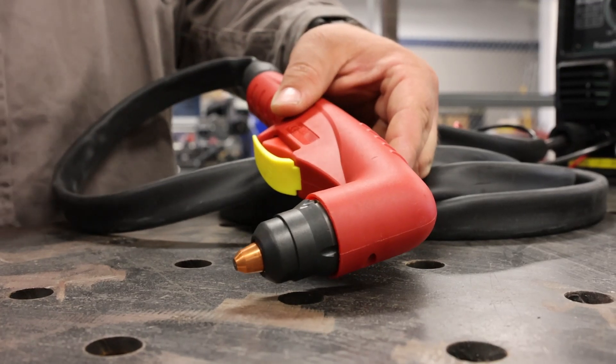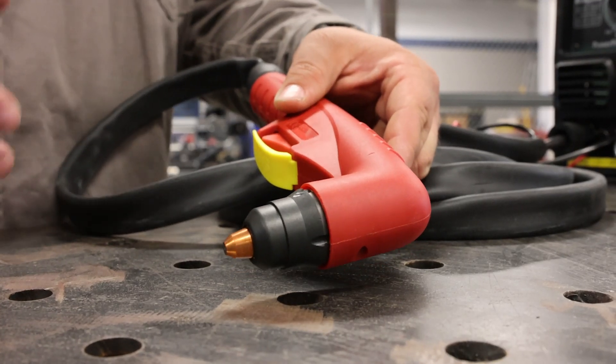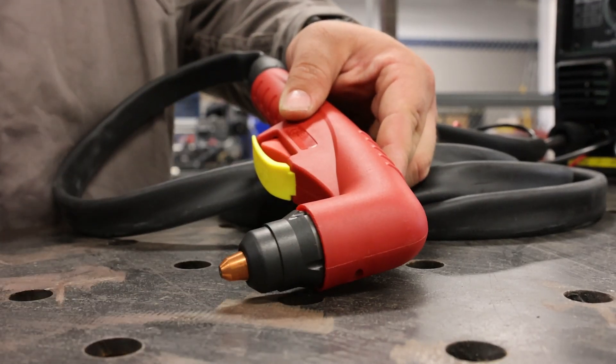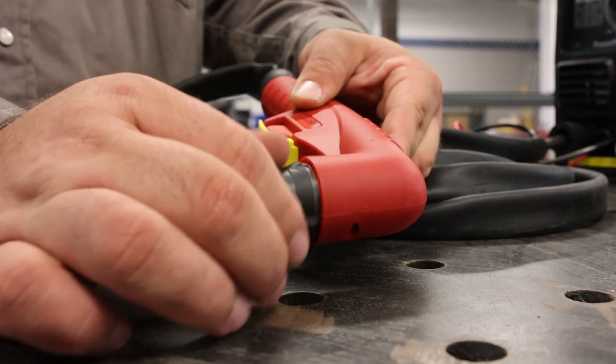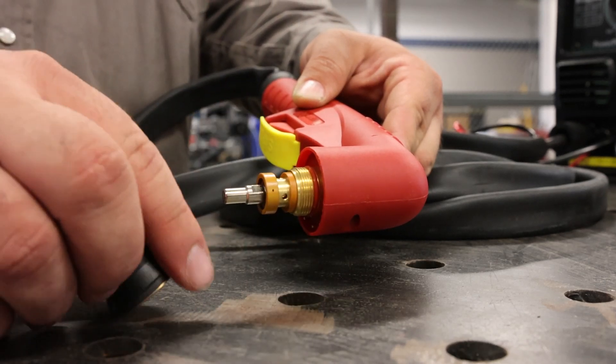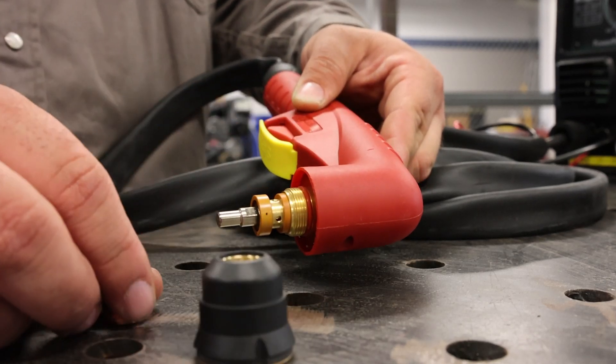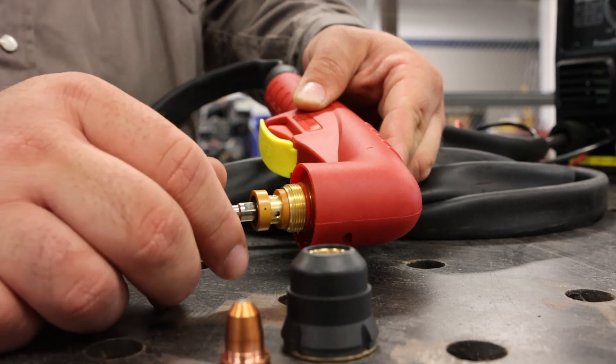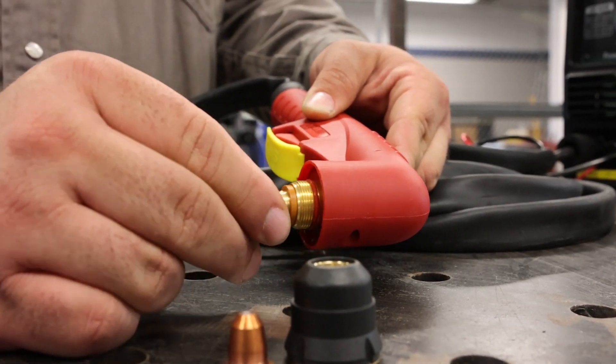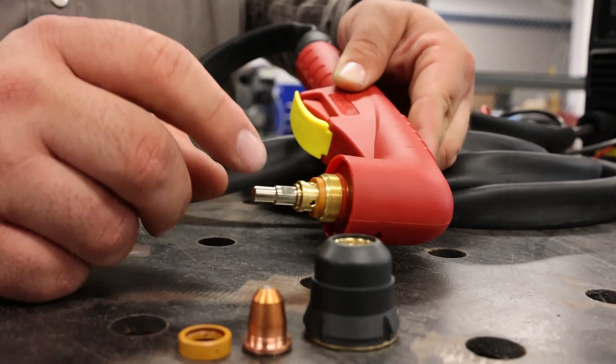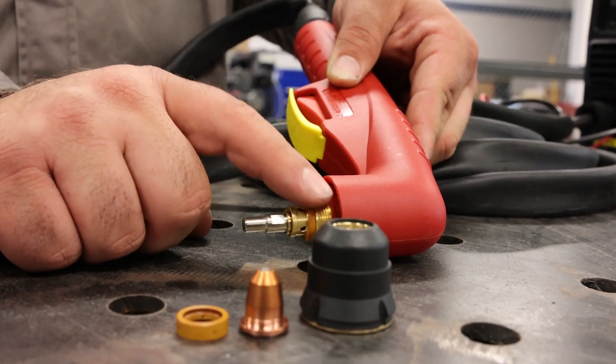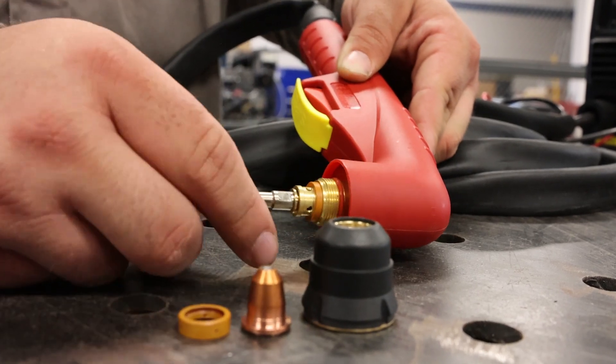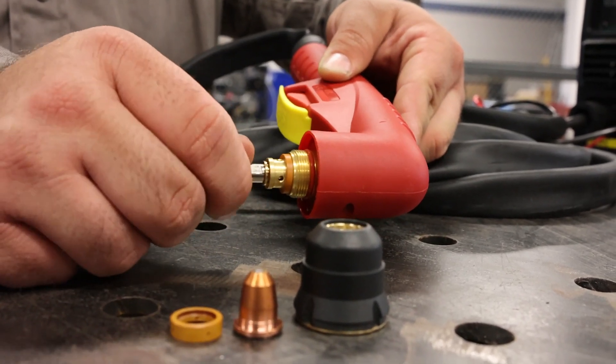Before we fire up the machine and start cutting with it, let's open up this torch and pull out the consumables, make sure everything is in its place and we'll talk about them. So first thing comes out is the retaining cup right there. This is considered the tip. Here's the swirl ring and the electrode's right here. We also have an o-ring that we need to make sure it's in place every time because this makes sure we have the seal. Everything's good. This is nice and tight right here.